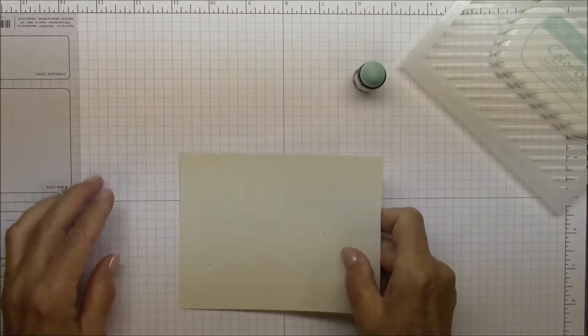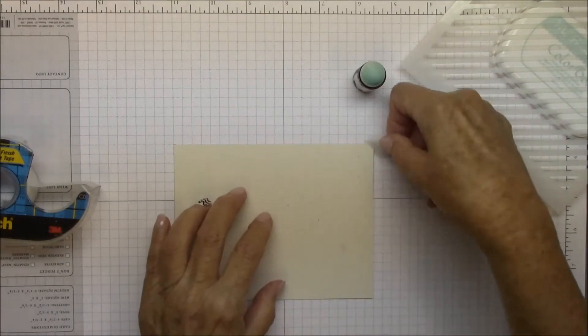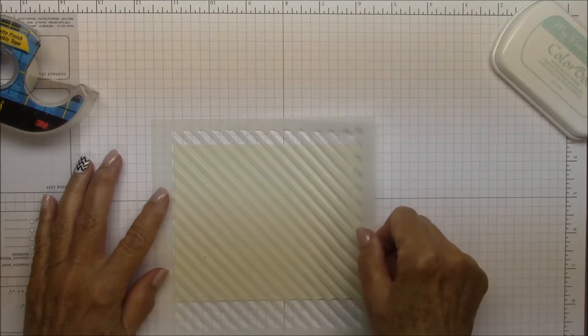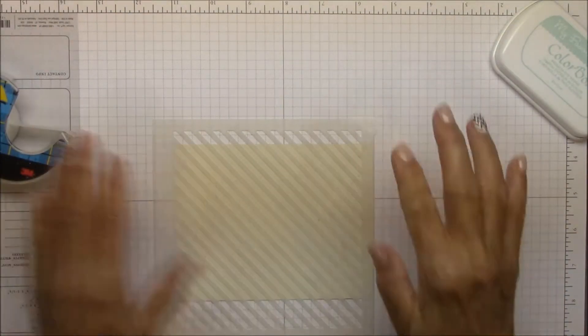What I'm going to start doing is tape my paper down to my grid, as always. Tape my stencil down so it won't move while I'm sponging.